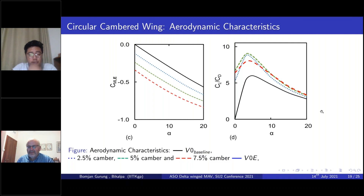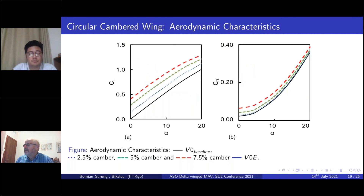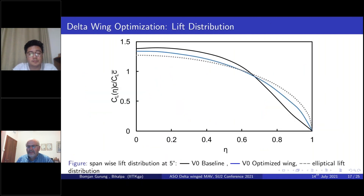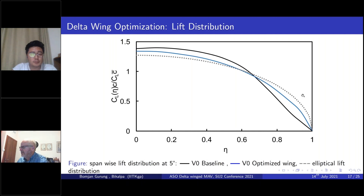It is interesting to observe that even for the delta wing, we were getting better efficiency with a lift profile very close to the elliptical lift distribution. To further understand the effect of camber on the delta wing, we studied the circular camber delta wing for three camber values: 2.5%, 5%, and 7.5%. Looking at CL versus alpha, with increasing camber we see an increase in CL.